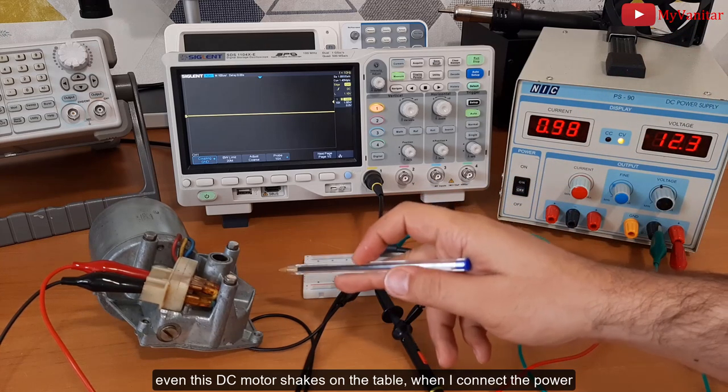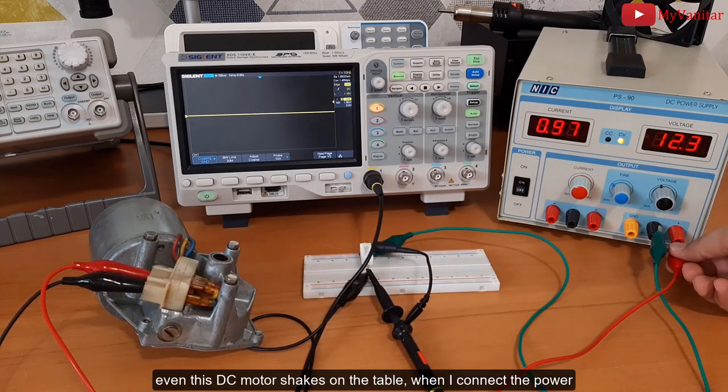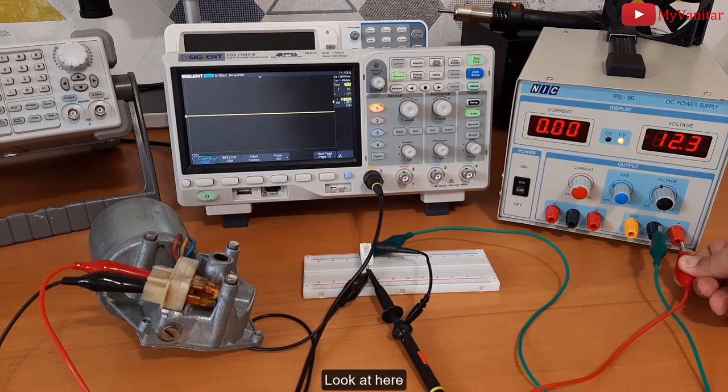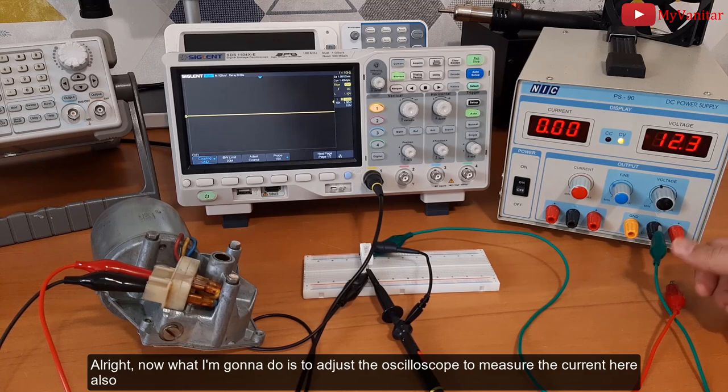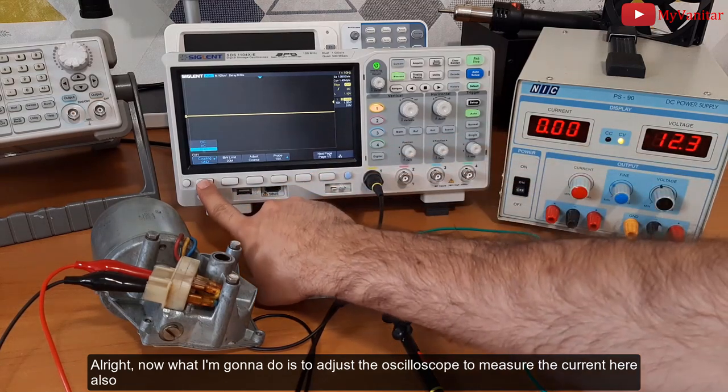Even this DC motor shakes on the table when I just connect the power. Look at here - did you see the movement? All right, now what I'm gonna do is adjust the oscilloscope to measure the current here also.